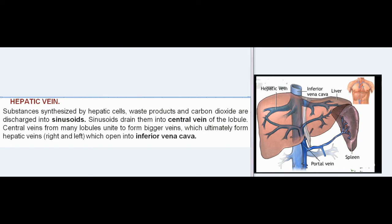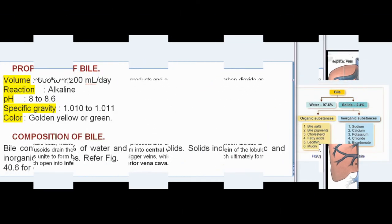Substances synthesized by hepatic cells, waste products, and carbon dioxide are discharged into sinusoids. Sinusoids drain them into the central vein of the lobule. Central veins from many lobules unite to form bigger veins, which ultimately form the hepatic veins — right and left — which open into the inferior vena cava.